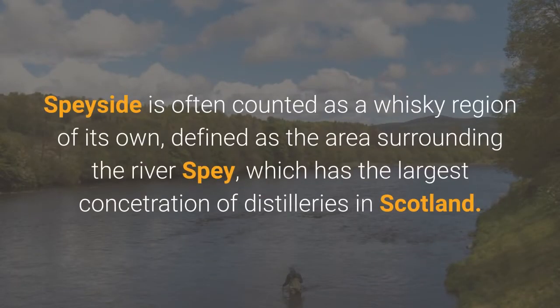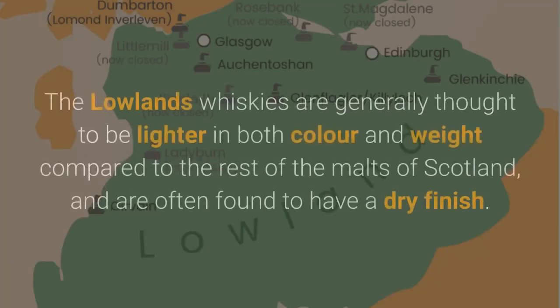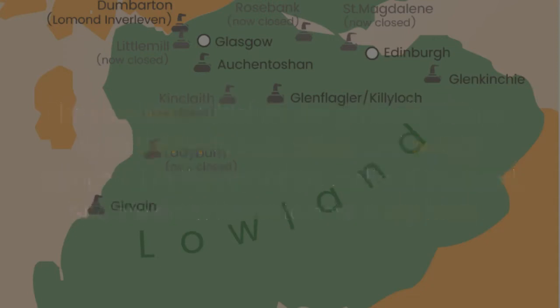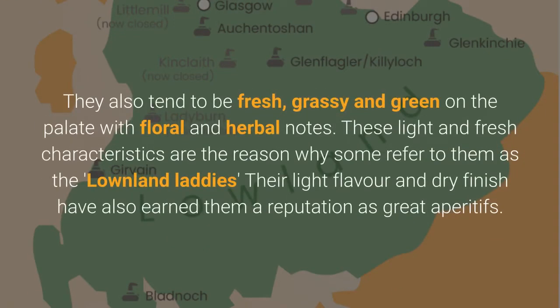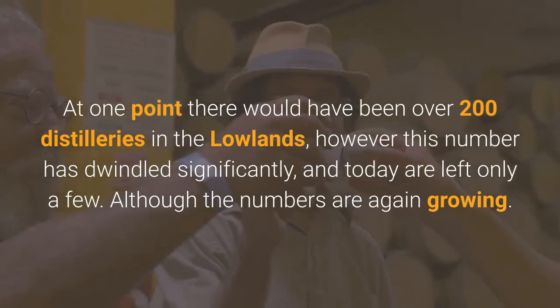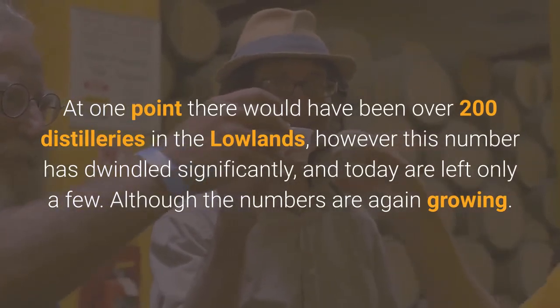Speyside is often counted as a whisky region of its own, defined as the area surrounding the River Spey, which has the largest concentration of distilleries in Scotland. Lowlands whiskies are generally thought to be lighter in both colour and weight compared to the rest of the malts of Scotland, and are often found to have a dry finish. They also tend to be fresh, grassy and green on the palate with floral and herbal notes. These light and fresh characteristics are the reason why some refer to them as the 'Lowland Laddies' — their light flavour and dry finish have also earned them a reputation as great aperitifs. At one point there would have been over 200 distilleries in the Lowlands, however this number has dwindled significantly, and today only a few remain.